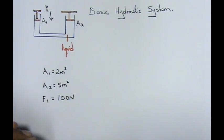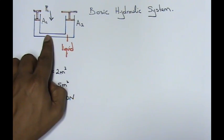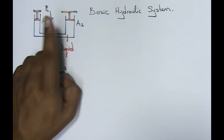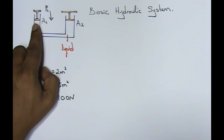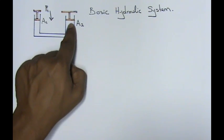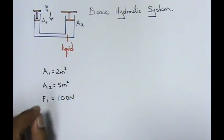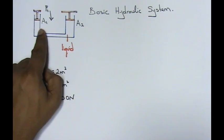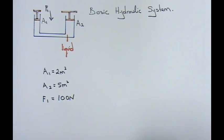That means, look at my hands, how it's moving. A1 goes down, and over here, A2 goes up. This is very useful for the three things that I've told you earlier, which is your hydraulic jack, your hydraulic pump, your car brakes. This concept is useful for that. This is the basic.